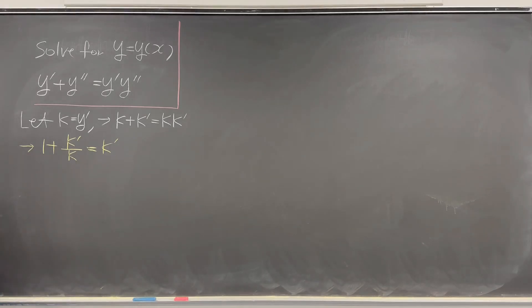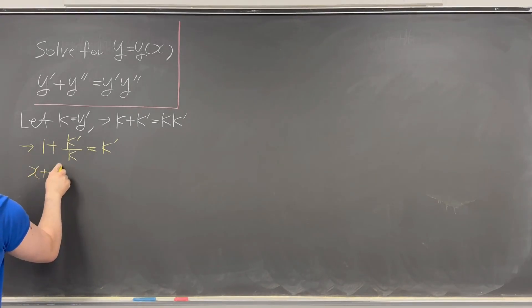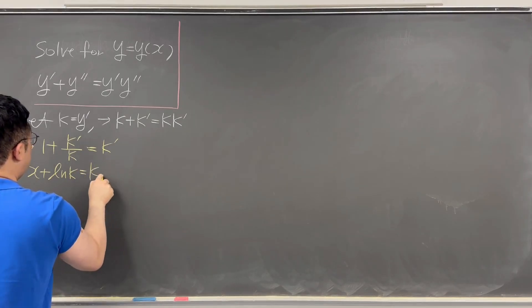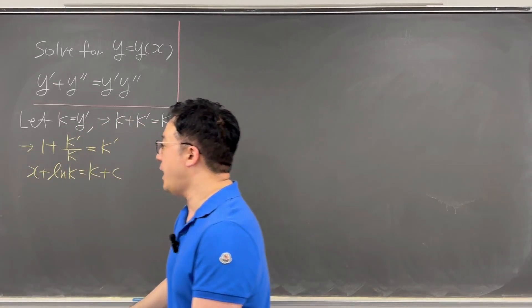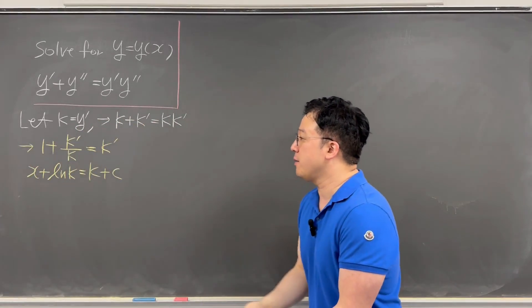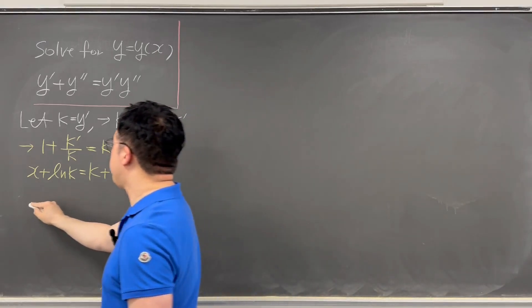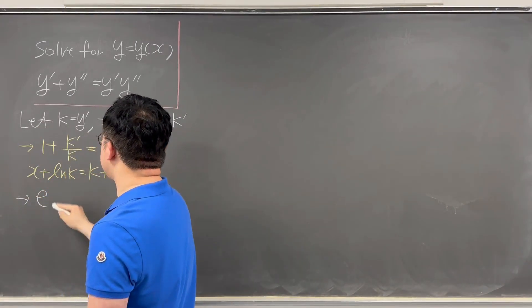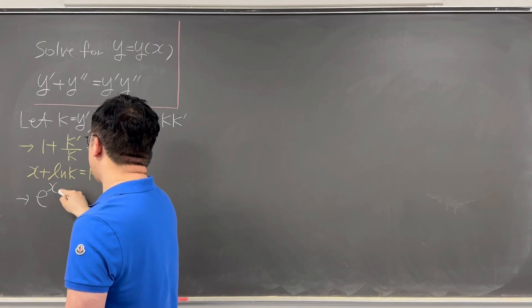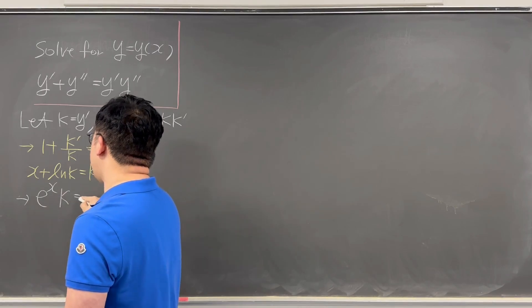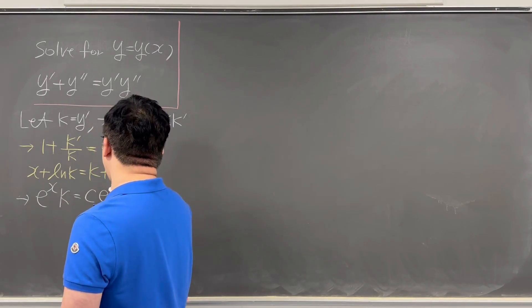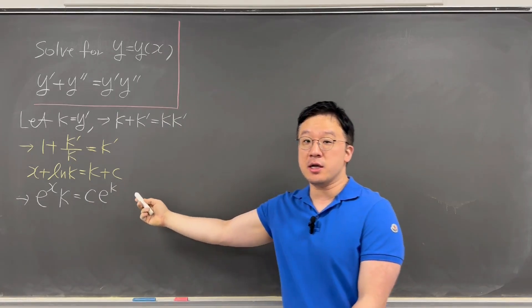We can integrate this to get x + ln(k) = k + c. Or we can exponentiate it to have e^x · k = c · e^k, where c is a constant.